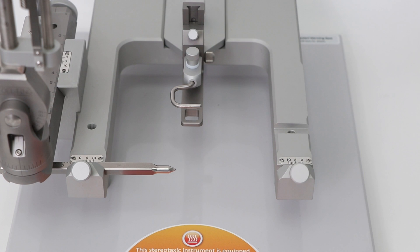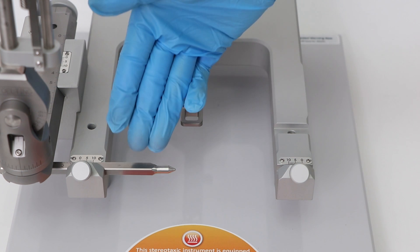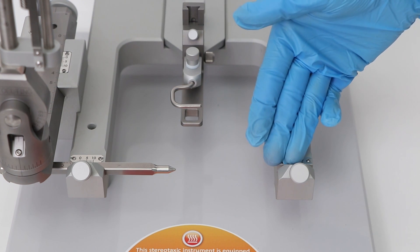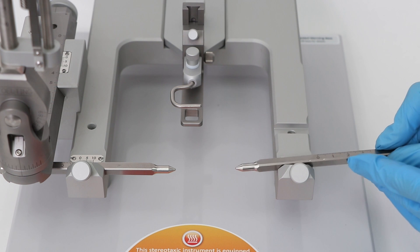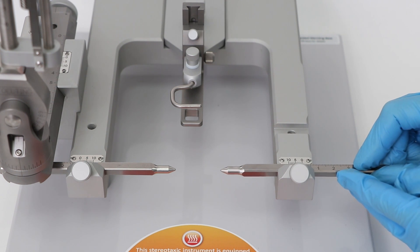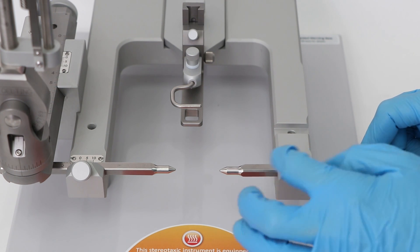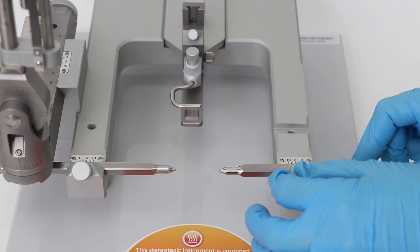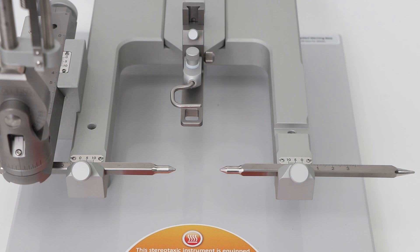For surgical applications using a rat, attach metal ear bars here and here. Do not over tighten them as these will require adjusting to situate the animal properly. Only fully tighten them once the animal is in position.